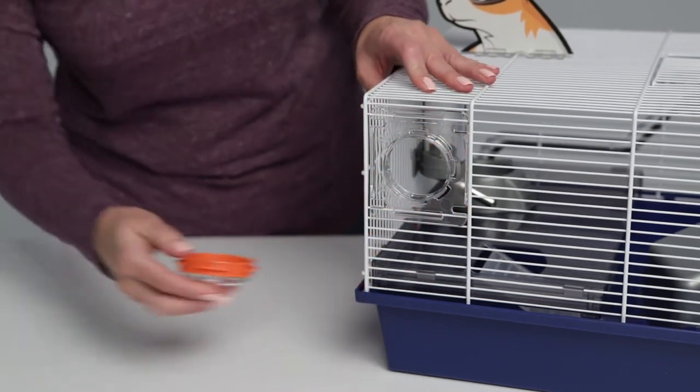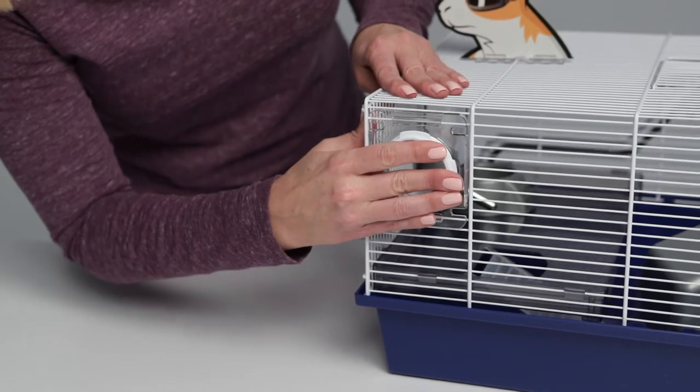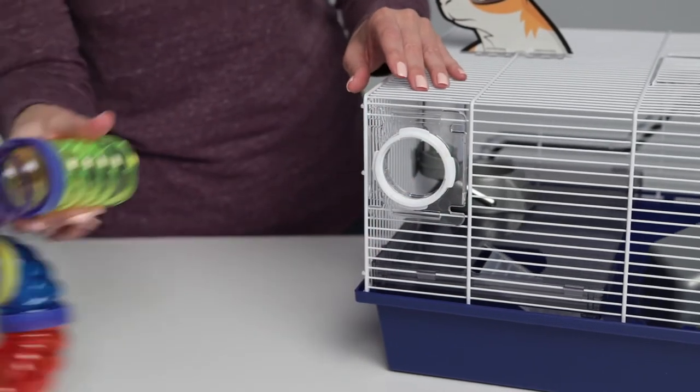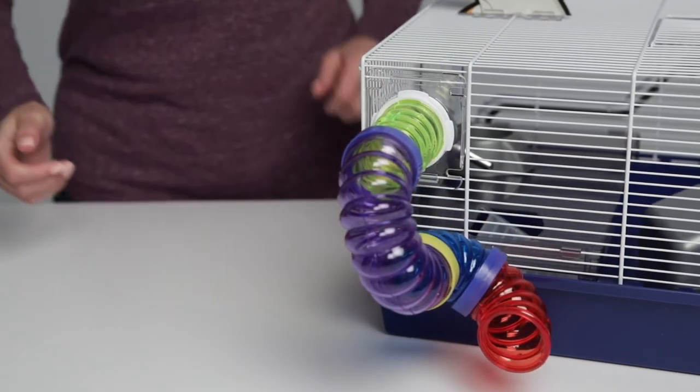The white rings are provided to fit tubes and accessories commonly sold in the United States. When additional accessories are not in use, be sure the hole is covered with the colored ring and a plastic cap.